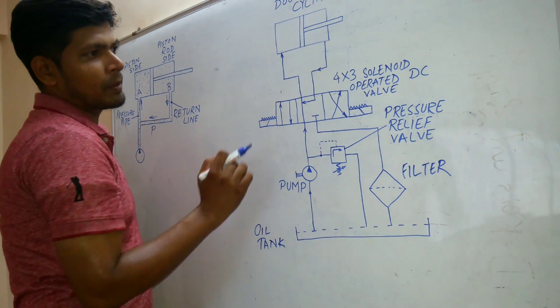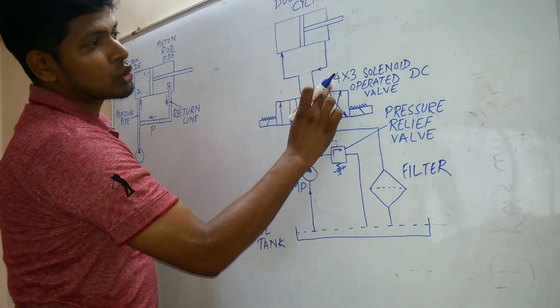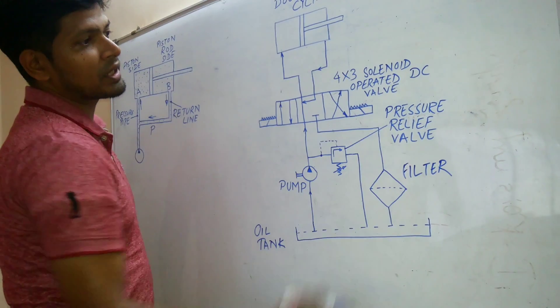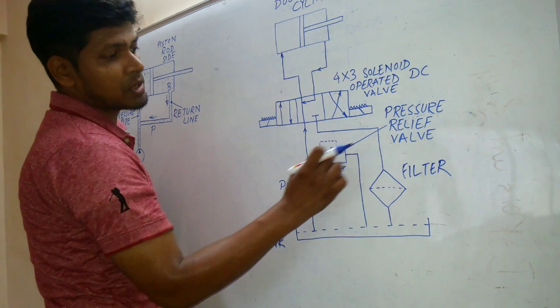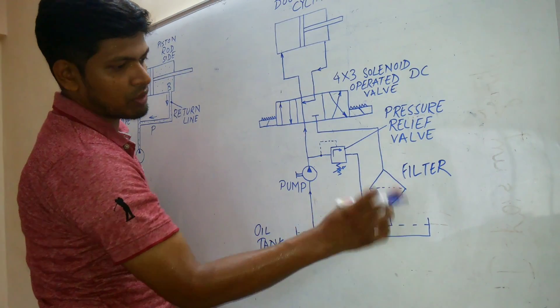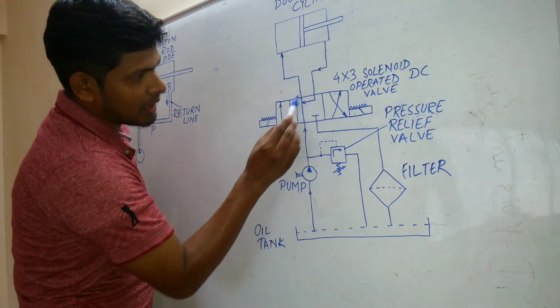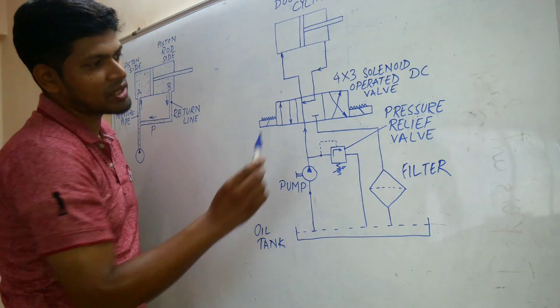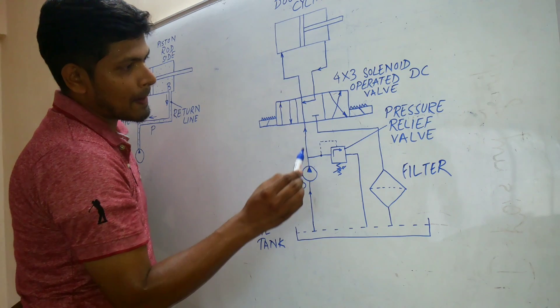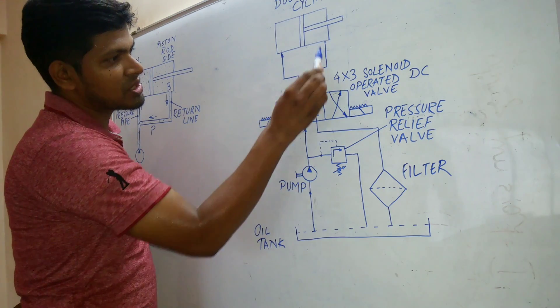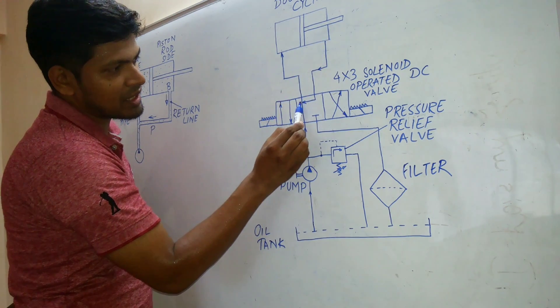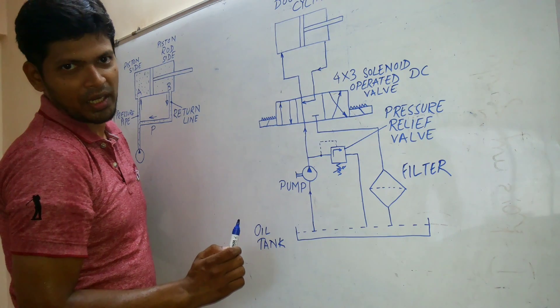This is a double acting cylinder. This is a 4 by 3 solenoid operated DC valve. This is pressure relief valve. This is the filter and this is oil tank. If you can see in the middle position or the central position, the pressure line and this is the return line. The return line is connected to the pressure line.